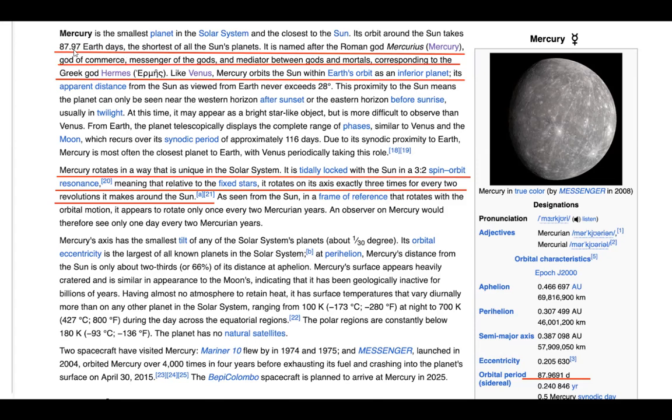So he has like an 88 Earth days of his orbit. So number 88 is always associated with Mercury. It's the shortest of all sun's planets. It is named after the Roman god Mercurius, god of commerce, messenger of the gods, the mediator between the gods and mortals corresponding to the Greek Hermes. So he's the messenger and he's also to do with immortality.